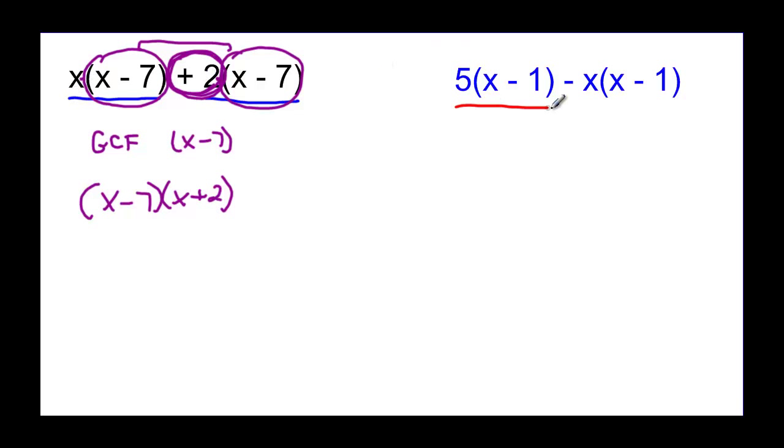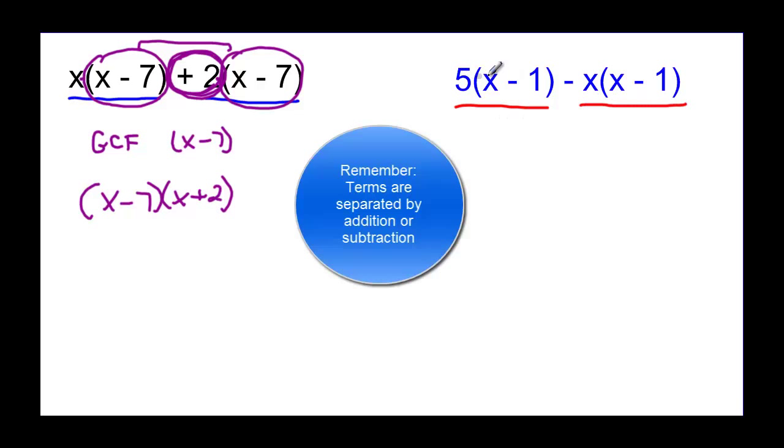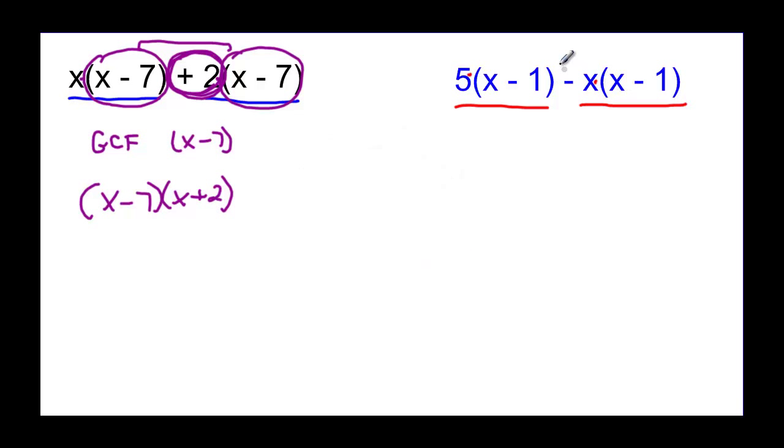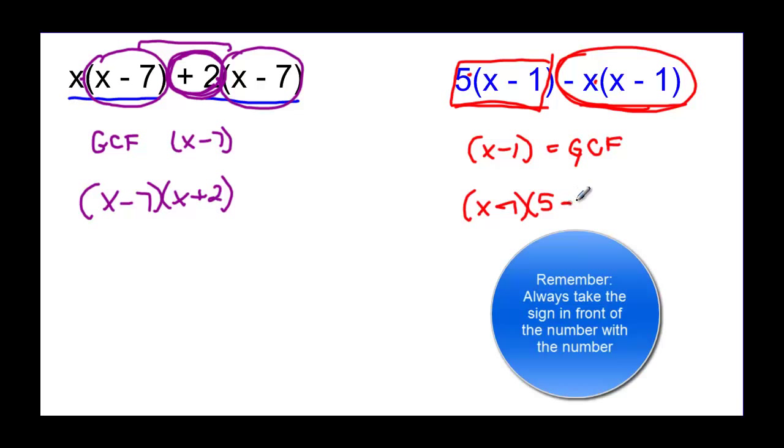That's my greatest common factor. So X minus 1 is a factor, and then X minus 1 times 5 will give me this first term, so I need a 5 inside that other parenthesis. And then I'm going to look at this term here, and X minus 1 times negative X is what gives me that second factor, so I need a minus X in my other factor.